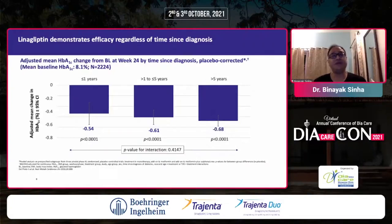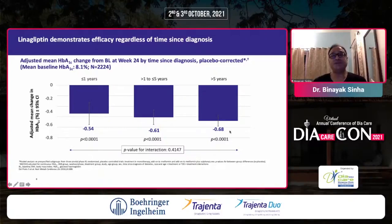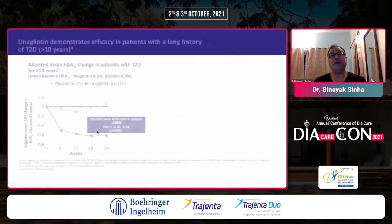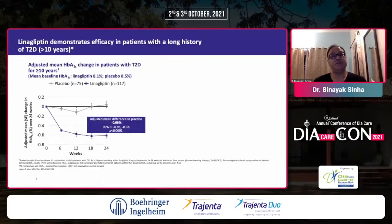About time of diagnosis: approximately 0.6% reduction in early, mid, and late diabetes. The p-value of interaction is not significant — 0.5, 0.6, and 0.68 — these are placebo-corrected HbA1c reductions. Moreover, it is durable. In patients who have had diabetes for more than 10 years, linagliptin continues to work, showing a reduction of 0.7% HbA1c at 24 weeks.